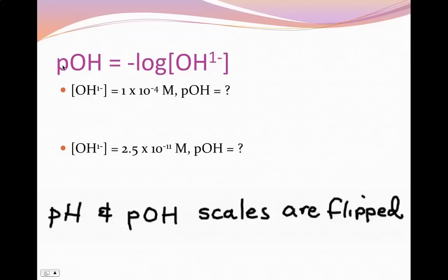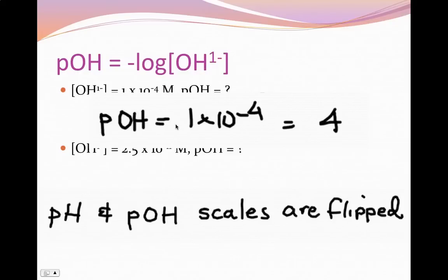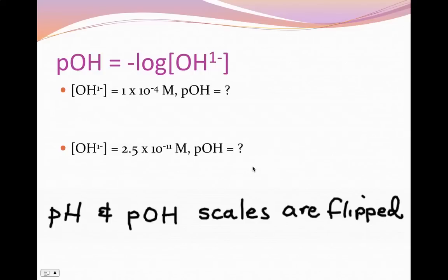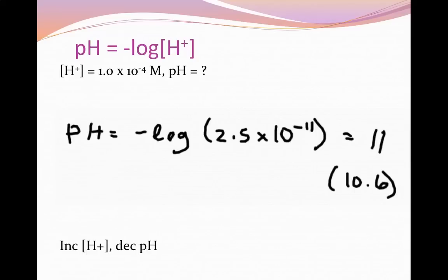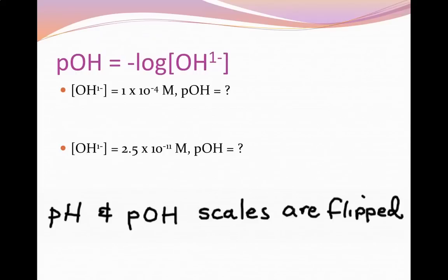We can use the exact same approach with pOH. pOH means the negative log of the hydroxide ion concentration. So pOH = −log[OH⁻]. For 1×10⁻⁴, pOH = 4. For 2.59×10⁻¹¹, pOH ≈ 10.6. The pH and pOH will equal the same numerical value when calculated from the same concentration, because it's the negative log of whatever that number is, whether it's H⁺ or OH⁻.